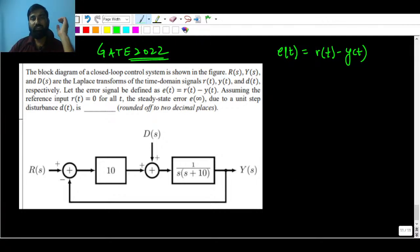Assuming reference input r(t) = 0. You have to make the reference input 0 when you are trying to calculate the steady state error for the disturbance input. So you have to find the steady state error e∞ due to unit step disturbance. Your d(t) is given here as u(t).